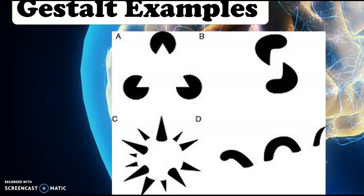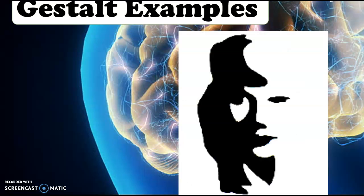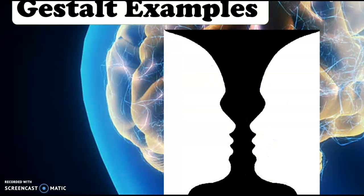Instead of seeing little Pac-Man shapes, your brain sees a triangle — the idea that your brain is trying to make sense and patterns of what it's seeing. Some people see a saxophone player, others see a woman. Similarly, you're either seeing two faces or a vase, and now that you know both, you can switch back and forth — though you can't really see them both at the same time. It's like your brain clicks a switch on and off.